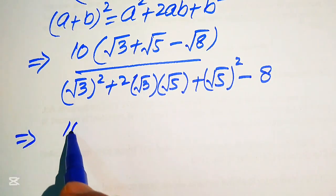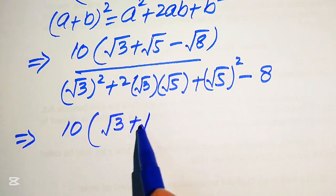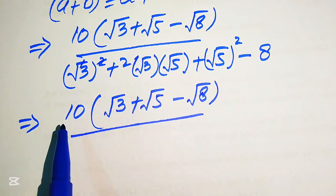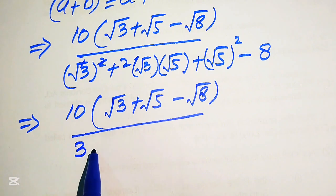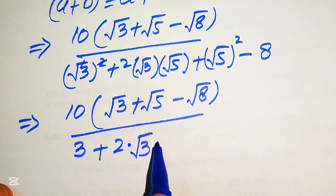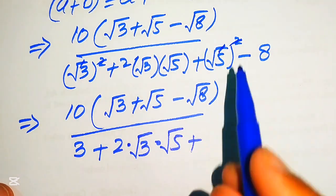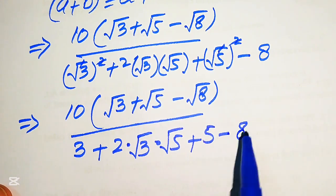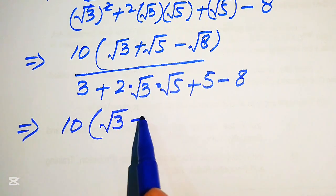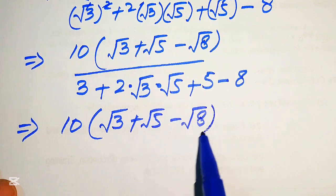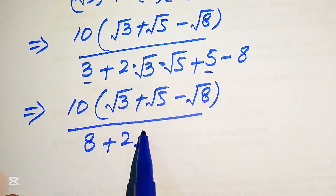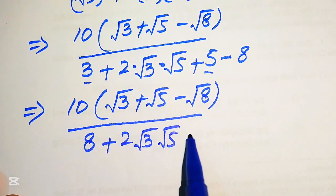In the next step we need more simplification. The expression becomes 10 times (square root of 3 plus square root of 5 minus square root of 8) divided by: the square root terms simplify to give 3, plus 2 multiplied by square root of 3 multiplied by square root of 5, plus 5, minus 8. So 3 plus 5 equals 8, plus 2 times square root of 3 into square root of 5, minus 8.